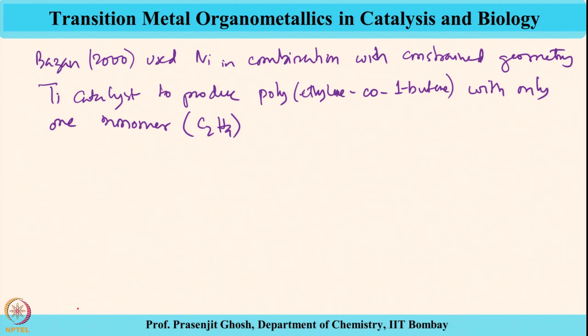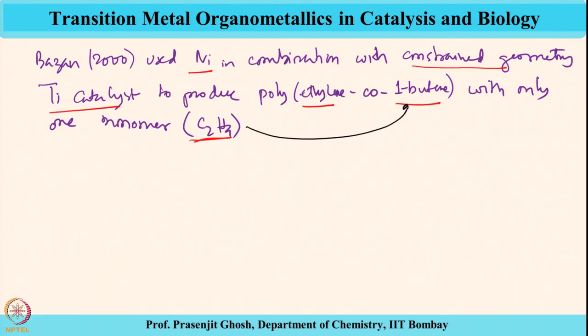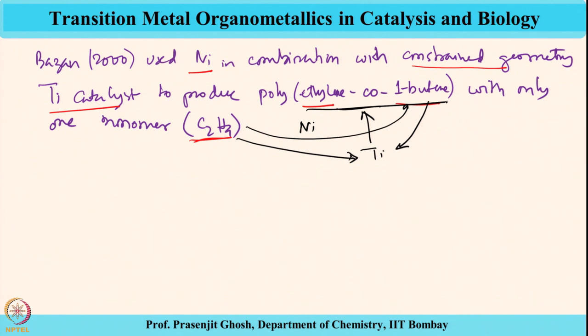This is a phenomenal piece of work. Two catalysts are used — nickel and the constrained geometry titanium catalyst — producing a copolymer of ethylene and 1-butene with only one monomer, ethylene. The first catalyst (nickel) converts ethylene to 1-butene. The second catalyst (titanium) then copolymerizes 1-butene and ethylene to give ethylene-co-1-butene. This is a beautiful and elegant demonstration of organometallic chemistry, showing how clear thinking can lead to wonderful catalyst development where two catalysts are made to work in tandem.